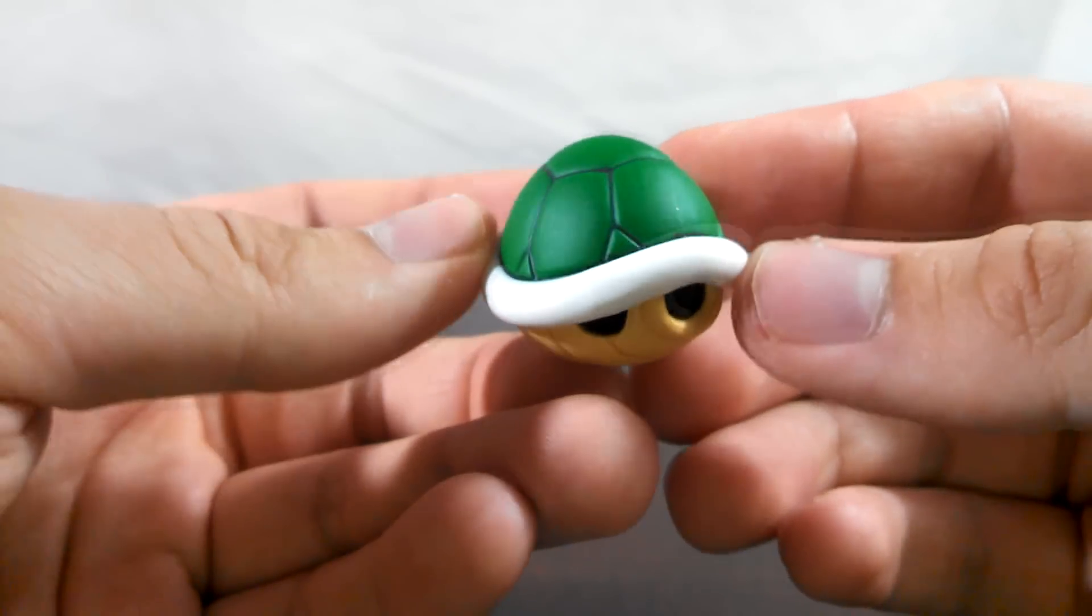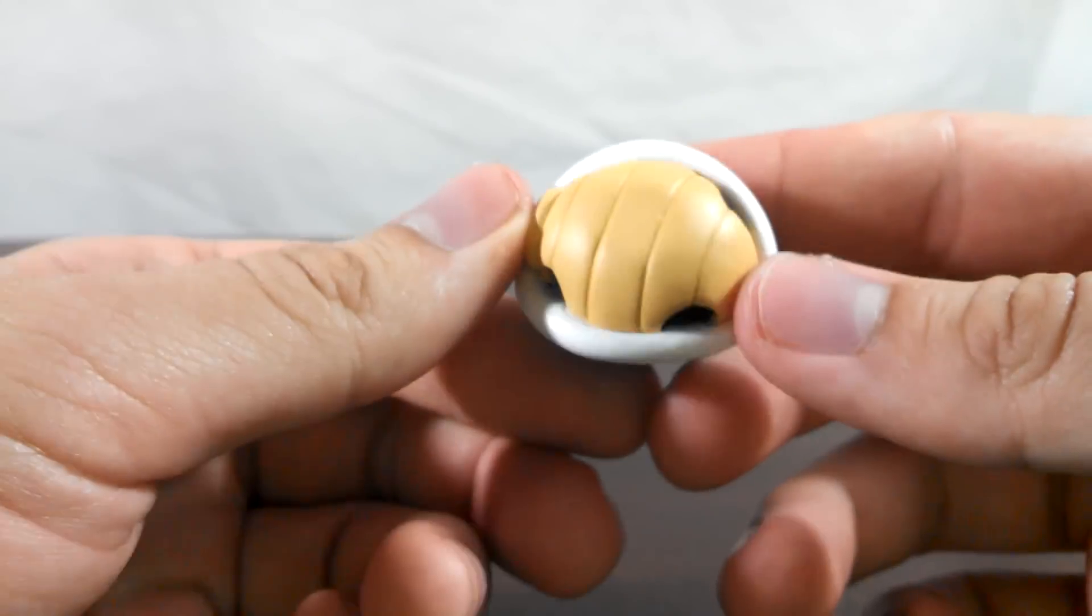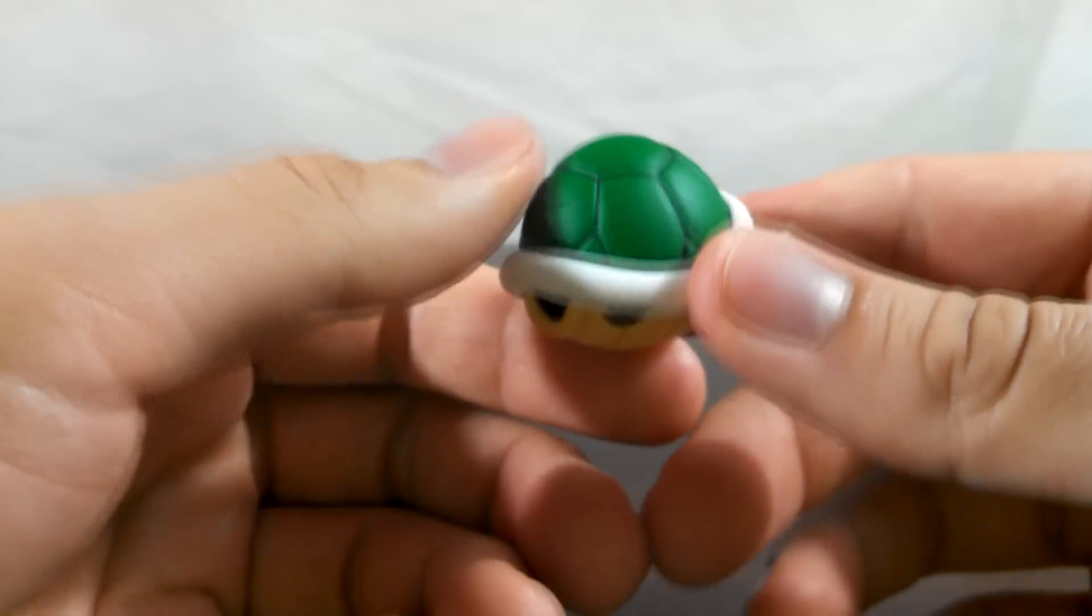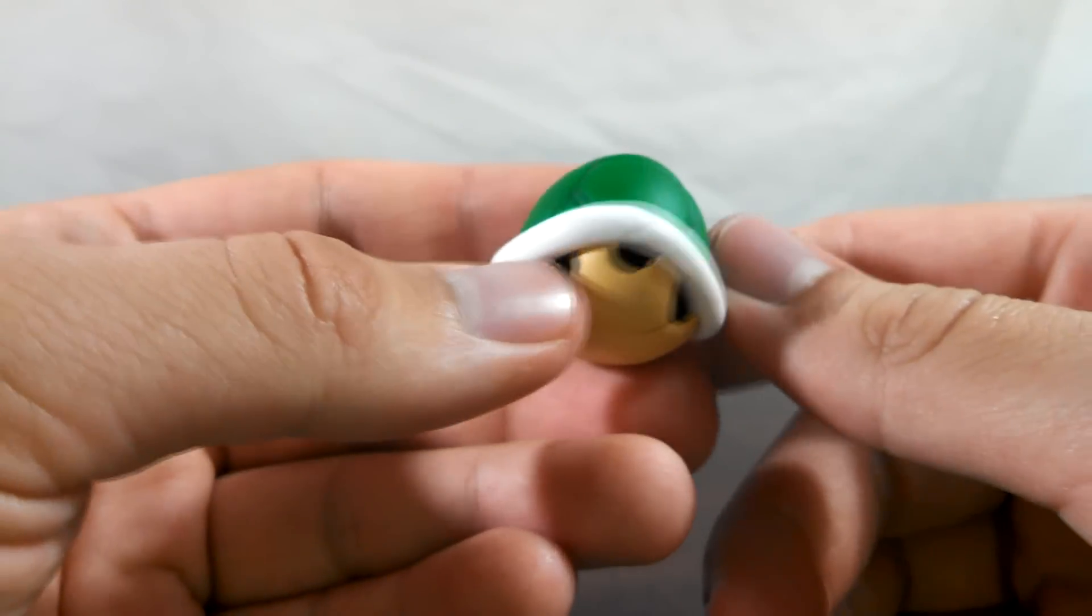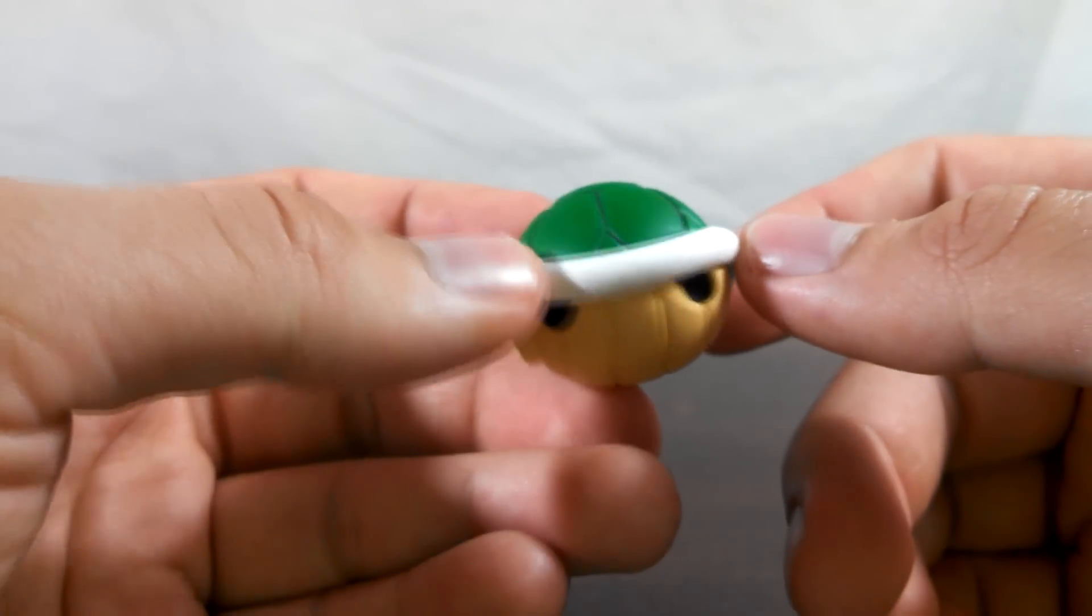Set B also comes with this nicely sculpted and painted Koopa shell. Detailing is great here. And this can be used just as a general prop for a display or a weapon for Mario.